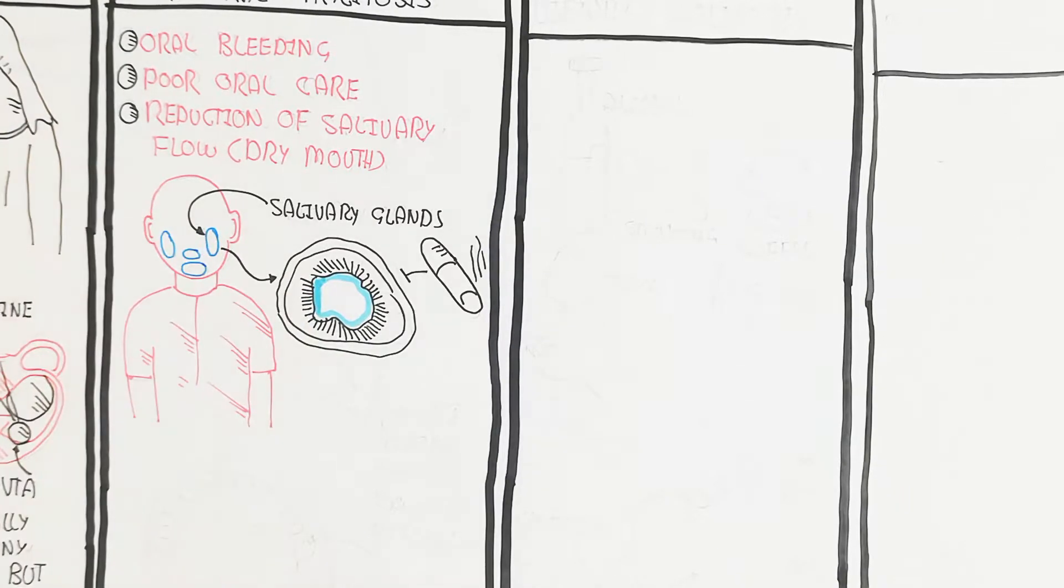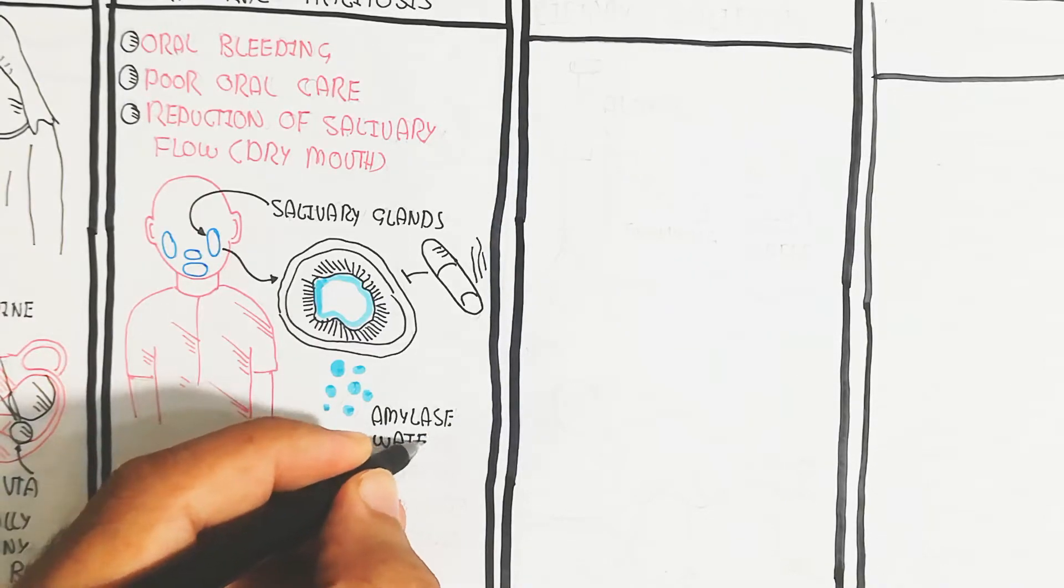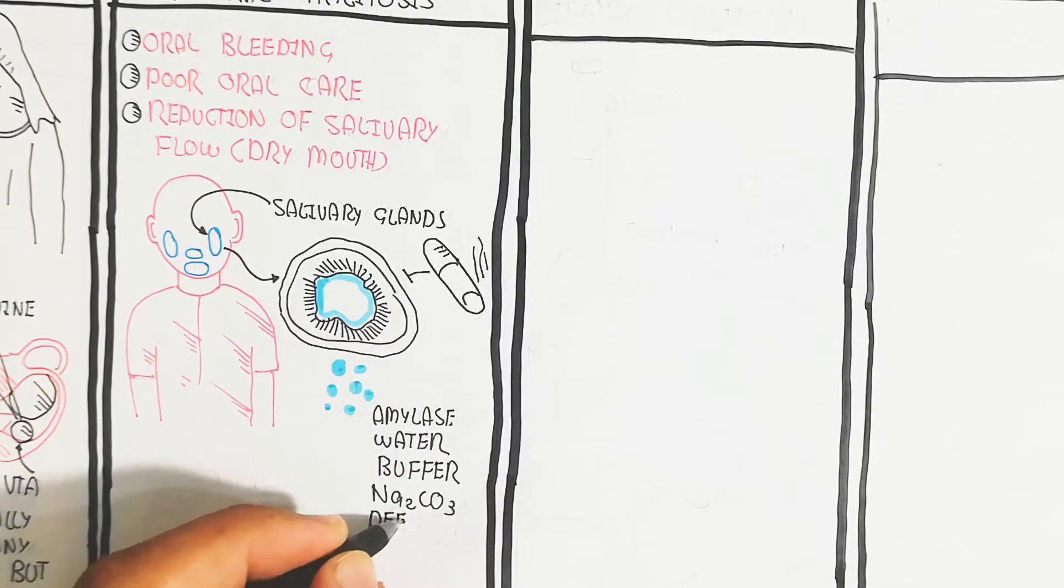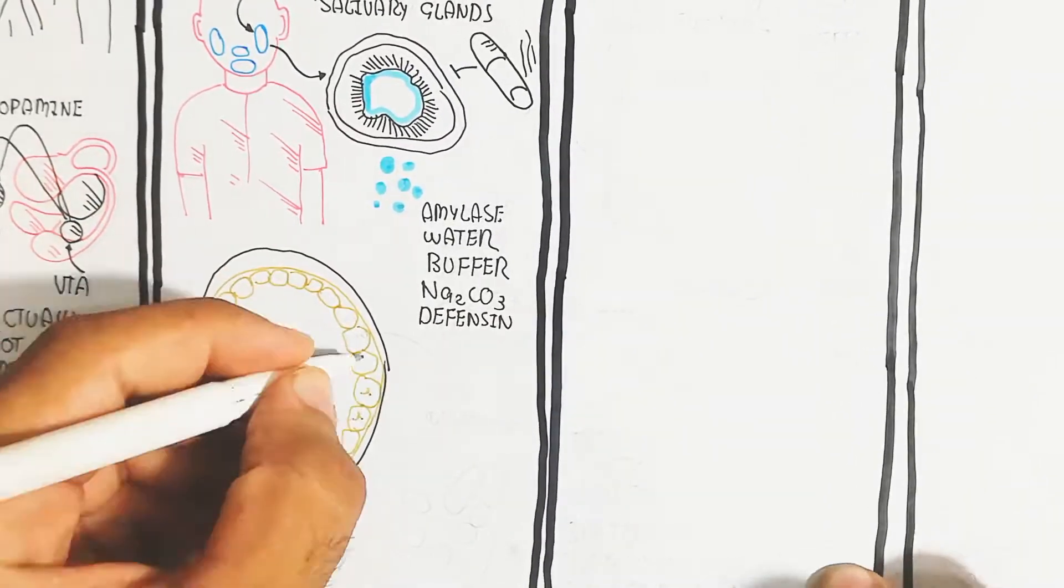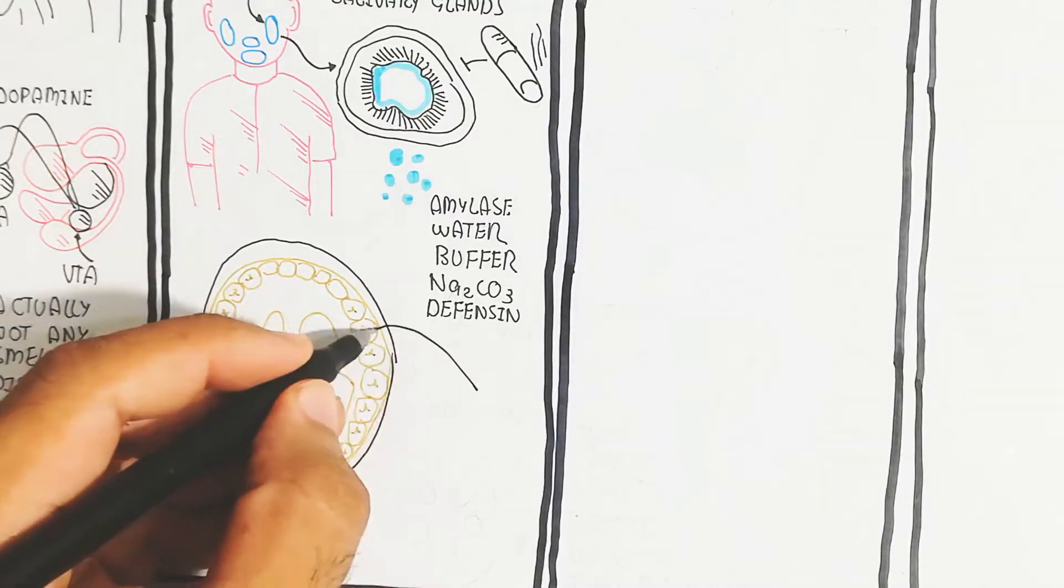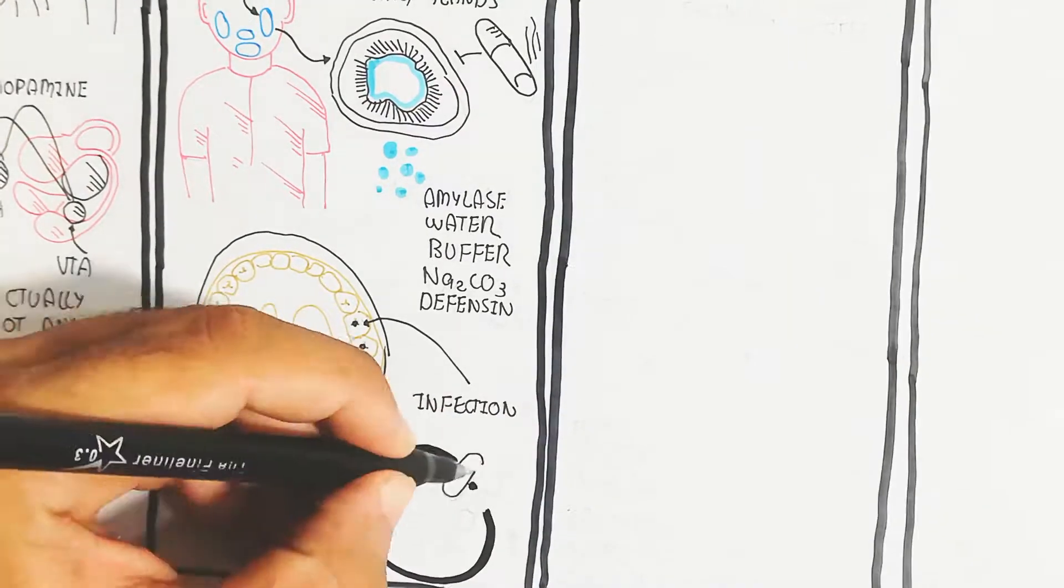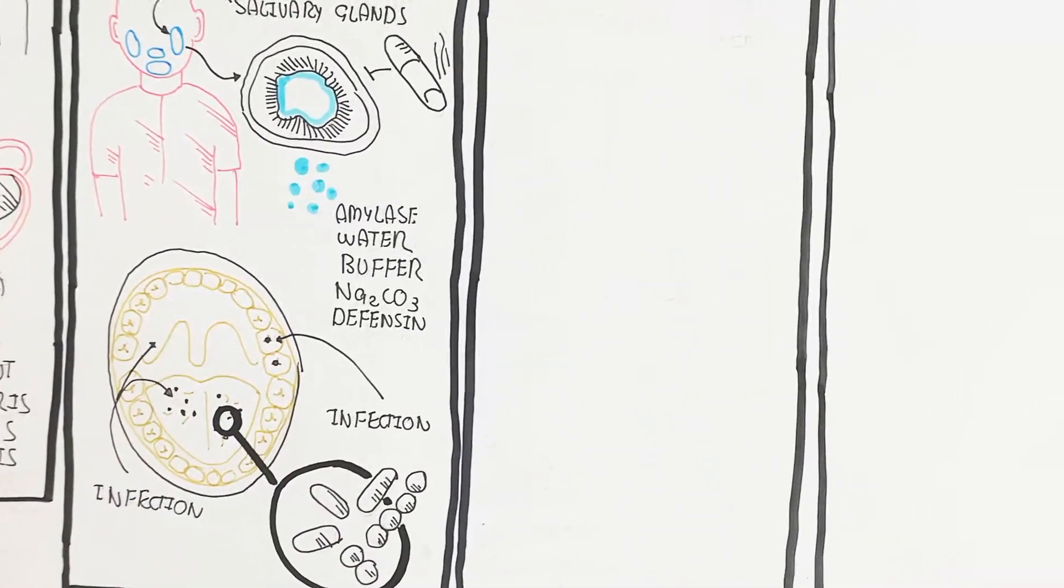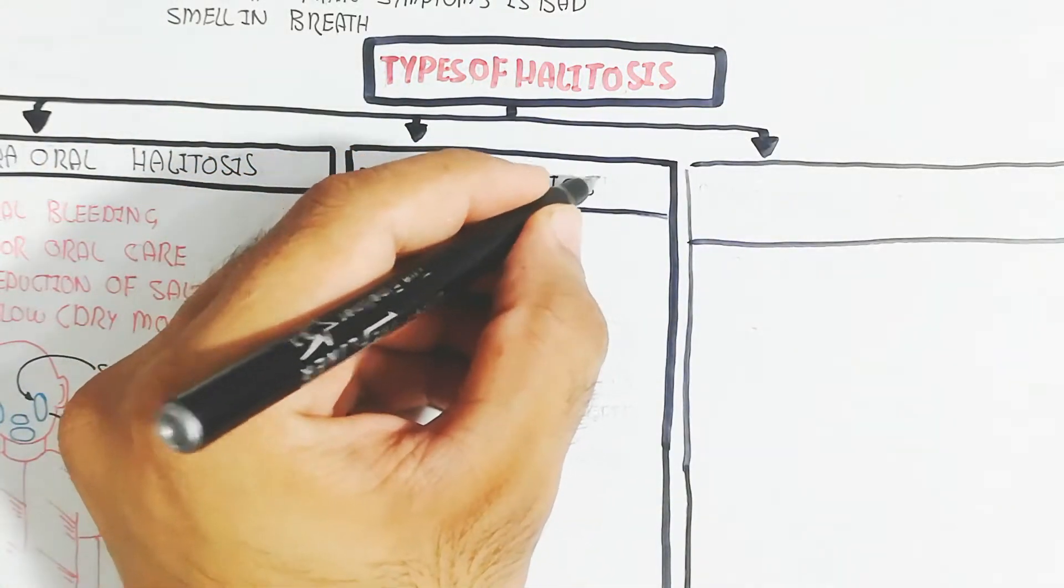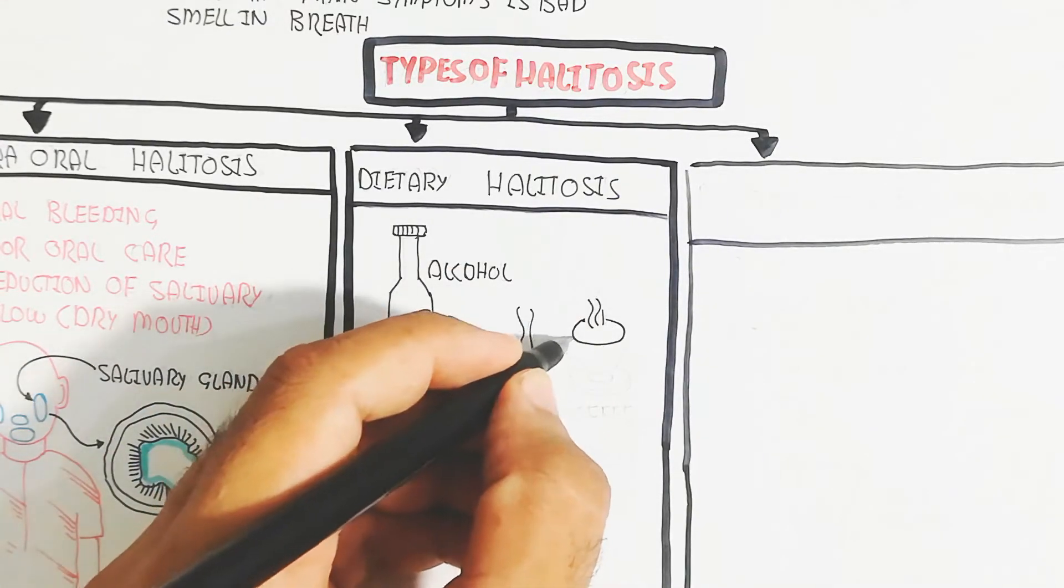Smoking can inhibit the production of saliva. Saliva contains amylase, water, and buffer to regulate pH. It also contains sodium carbonate and defensins used for protection against pathogens. Infection can cause teeth and tongue infection, leading to bacterial growth which produces bad odor through anaerobic respiration or other problems during sleep.